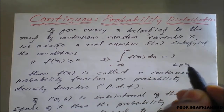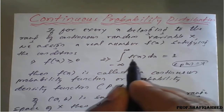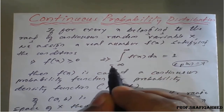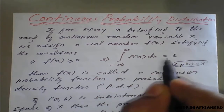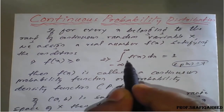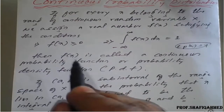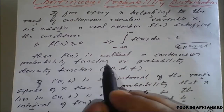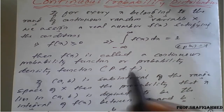For discrete, the condition is summation of p(x) equal to 1. But for continuous, we have integration. The condition becomes: the integral from minus infinity to plus infinity of f(x) dx equals 1. The first condition is f(x) ≥ 0, and the second condition uses integration. Then f(x) is called the continuous probability function or probability density function, PDF.